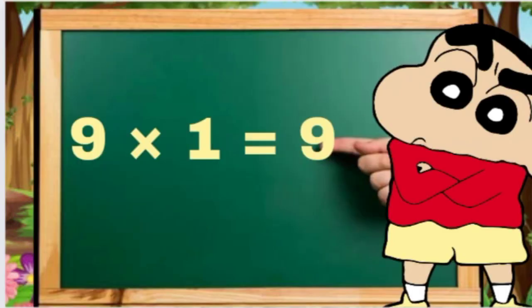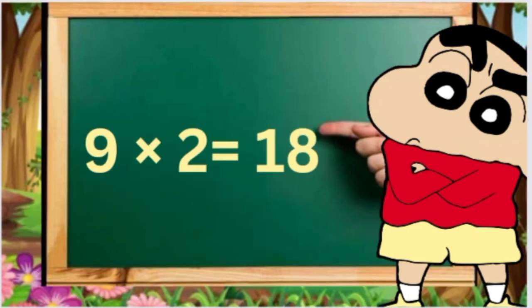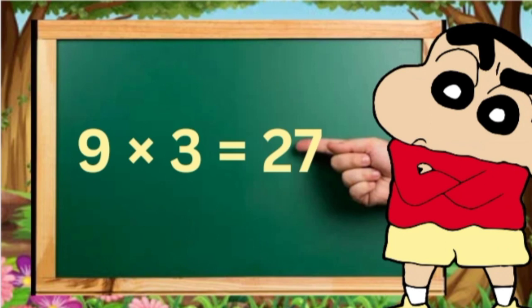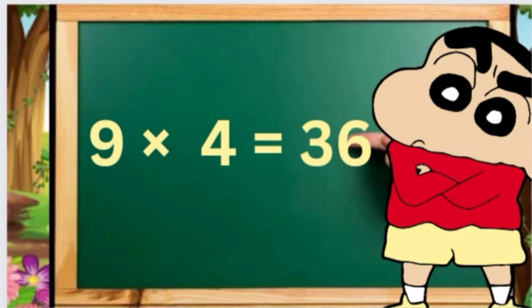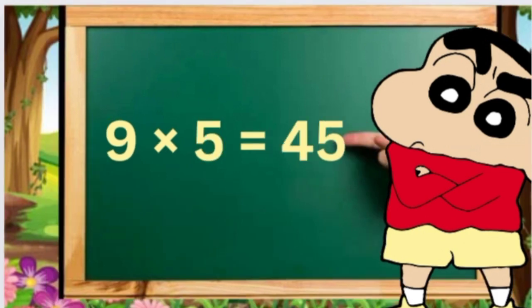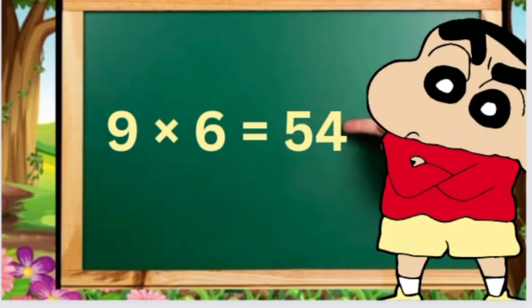Nine ones are nine, nine twos are eighteen, nine threes are twenty-seven, nine fours are thirty-six, nine fives are forty-five, nine sixes are fifty-four.